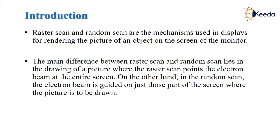The main difference between raster scan and random scan is that when raster scan draws the picture on the screen, it occupies the whole screen. But random scan is used only on the part of the screen where the picture is to be drawn — it will not occupy the whole screen. Raster scan displays images made up of pixels, so it is pixel-based, while random scan uses mathematical formulas or lines to draw the pictures.